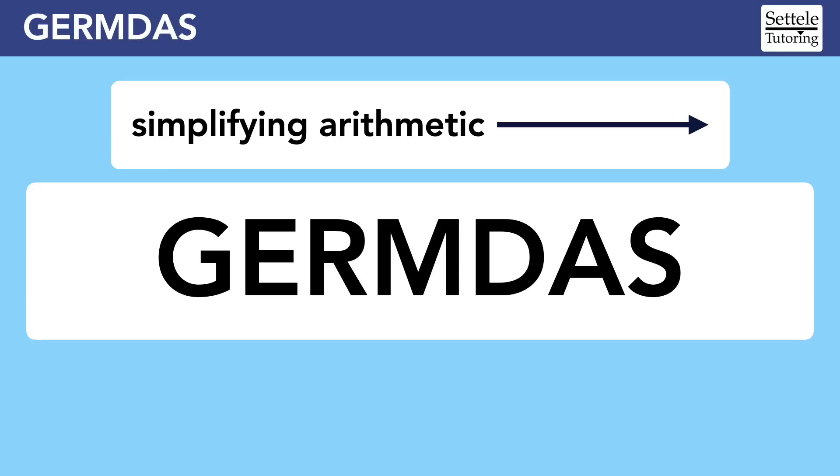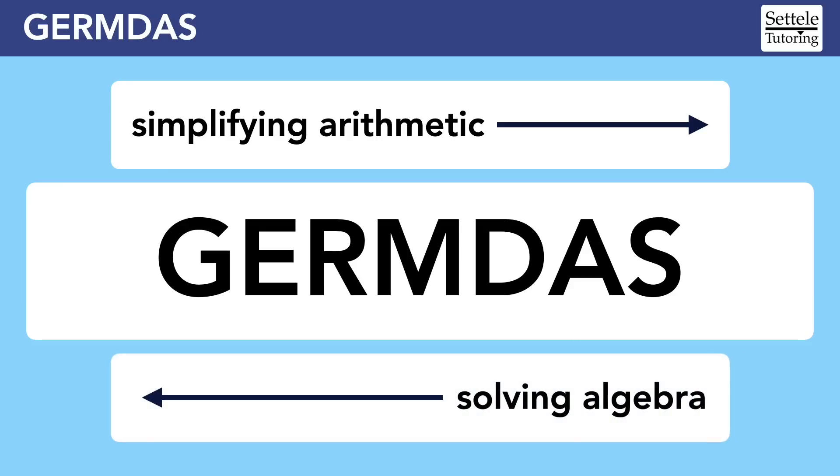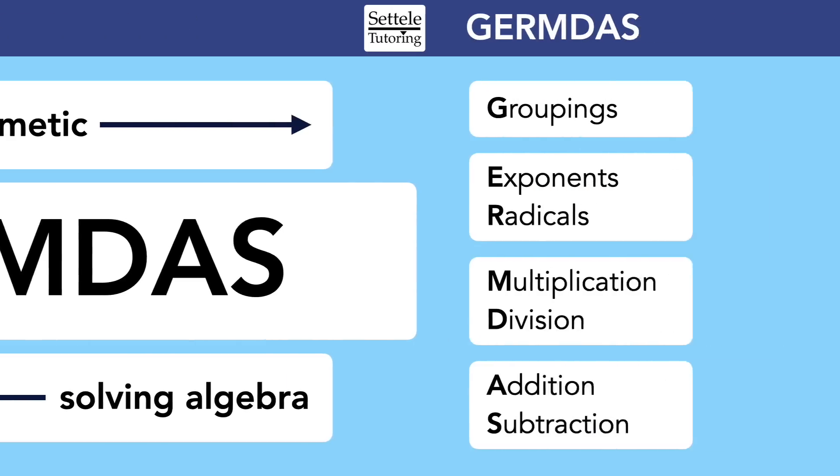GERMDAS reminds us to start with any groupings, then to simplify any exponents and radicals, then multiplication and division, and finally addition and subtraction. But did you know that you can also use GERMDAS to solve algebra equations? We just need to go backwards through the word, which makes sense since algebra is kind of like backwards math.